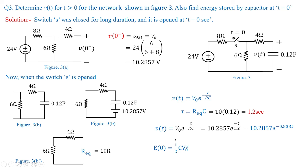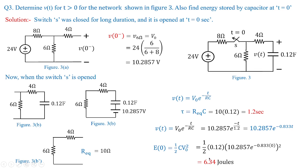The energy stored in the capacitor is calculated using the formula: energy equals half C V0 squared. At t equal to 0, V0 is 10.2857 volts. Squaring that value, multiplying by C equal to 0.12, and dividing by 2 gives the energy stored as 6.34 joules. These types of questions are frequently asked in competitive exams, and this is the main approach to solve such problems.